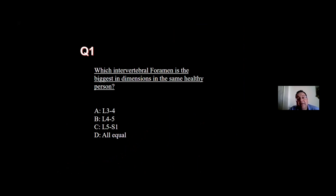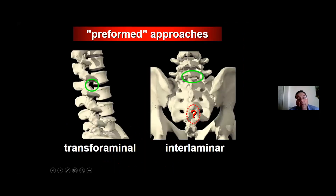Which intervertebral foramen is the biggest in dimension in the same healthy person? When we go from up to down, the intervertebral foramen becomes narrower, and the reverse is true for the interlaminar space. So L5-S1 has the biggest dimension, and when we go up, L3-4 is bigger than L4-5 and so on.